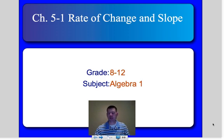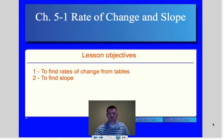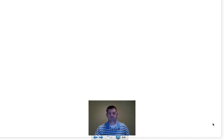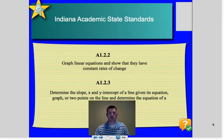Today we're going to talk about rate of change and slopes. We're in chapter 5.1. The objectives are to find rates of change from tables and to find slopes. Our standards are A1.2.2 and A1.2.3, which is working with rates of change and finding slopes from lines of equations.